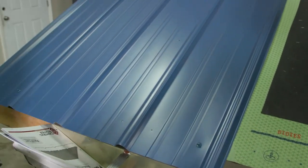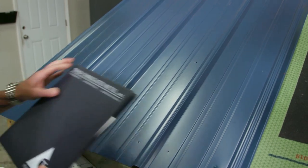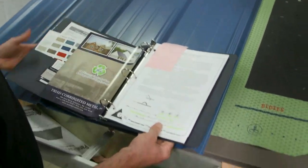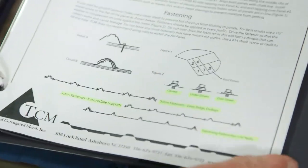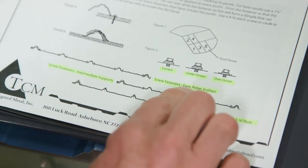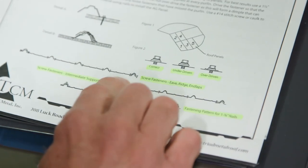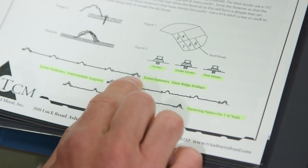Okay, this is the last one. I know I'm taking a lot of time, but it was a lot of you guys that had a question about this. So I'm going to make sure we address it. Screw fasteners at the eave, ridge, and end laps.